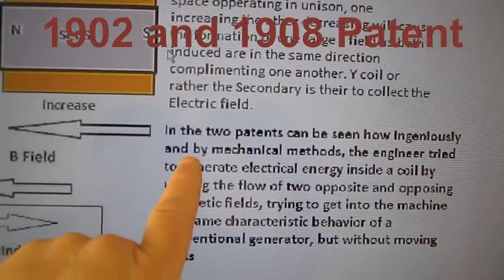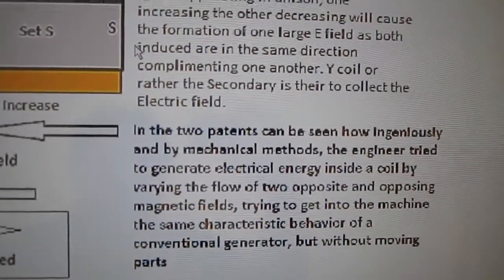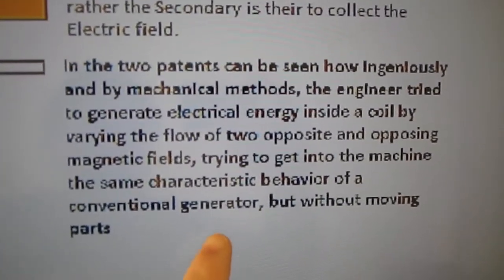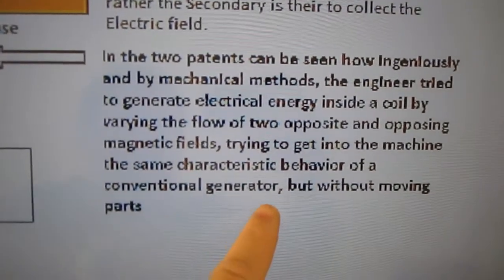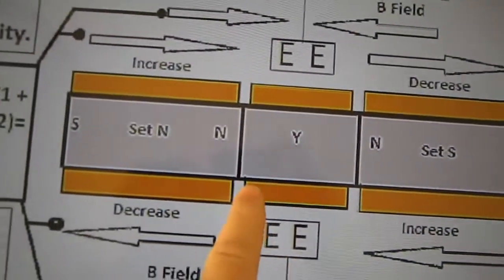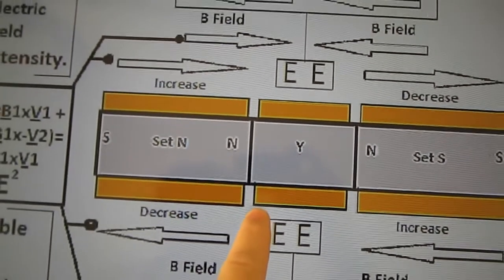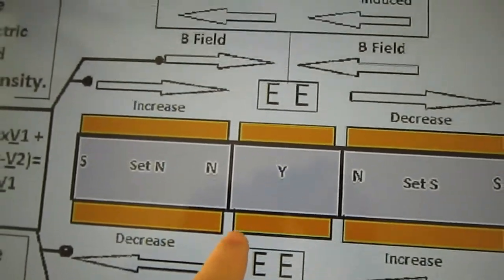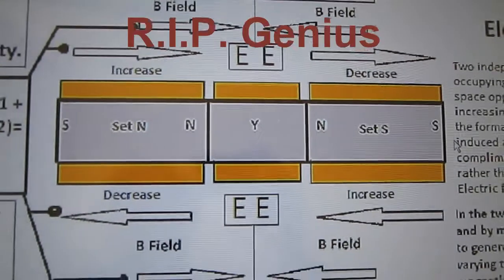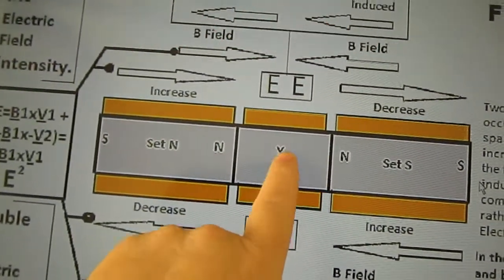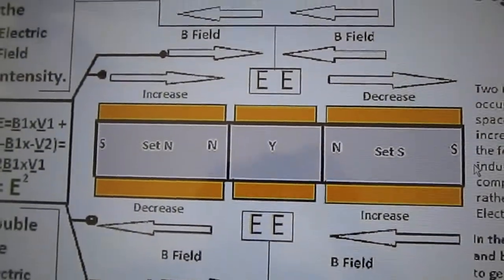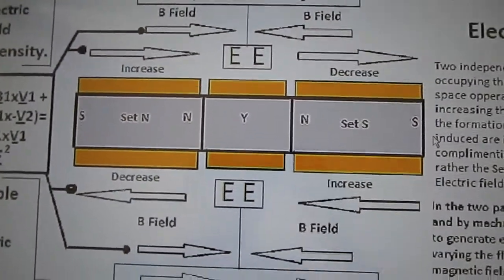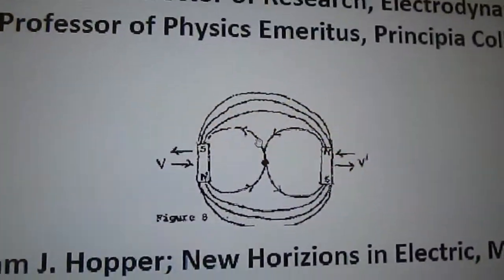The secondary coil is there to collect the electric field. In the two patents, you can see how ingeniously mechanical methods were used to generate electrical energy inside a coil by varying the flow of two opposite and opposing magnetic fields — getting the same characteristic behavior as a conventional generator but without moving parts. Clemente Figuera had this device working in his house. His 1908 patent was his glory, though he died a couple of months later.